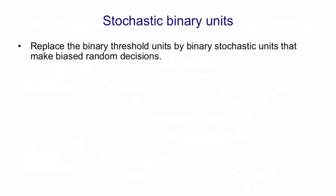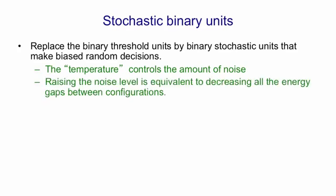The way we get noise into a Hopfield net is to replace the binary threshold units by binary stochastic units that make biased random decisions. The amount of noise is controlled by something called temperature, which you'll see in a minute in the equation. Raising the noise level is equivalent to decreasing all the energy gaps between configurations.